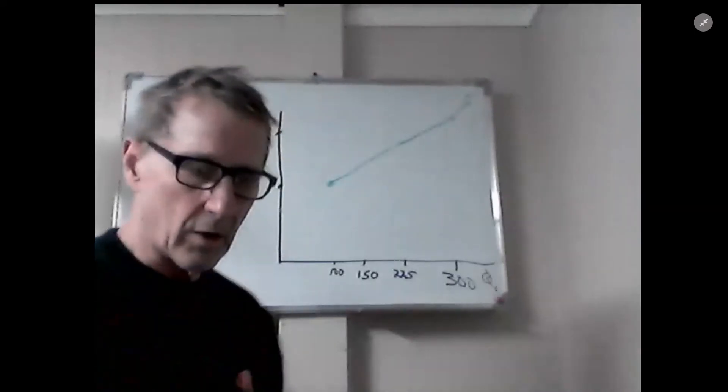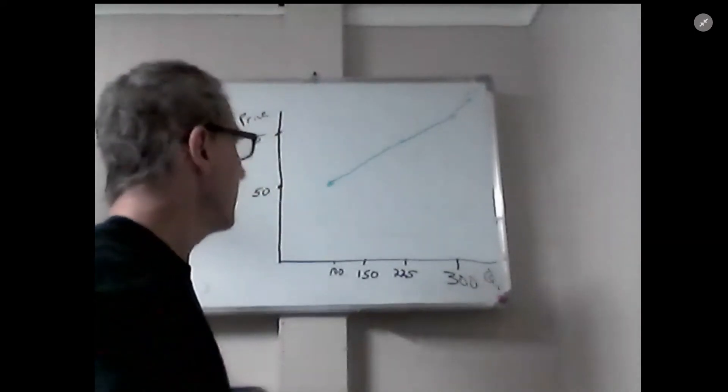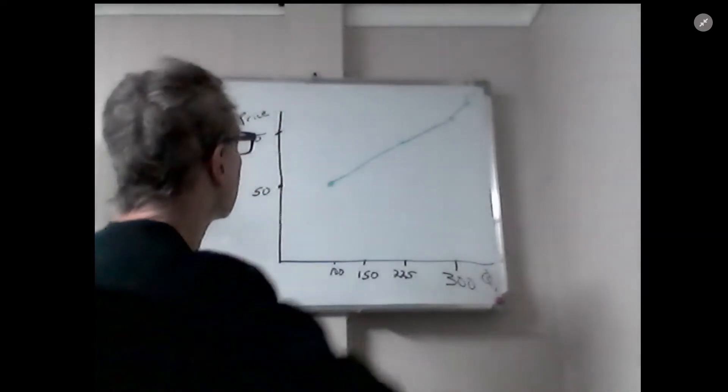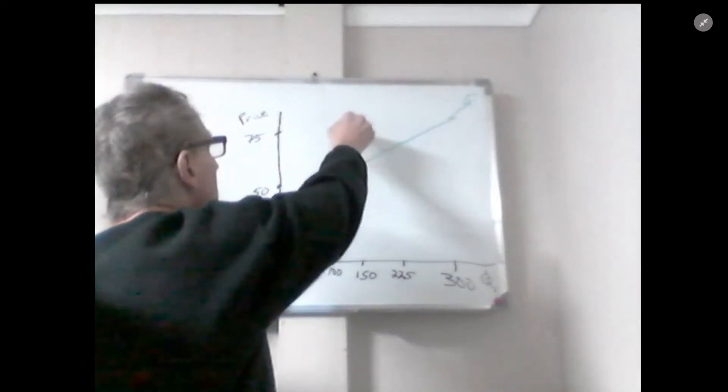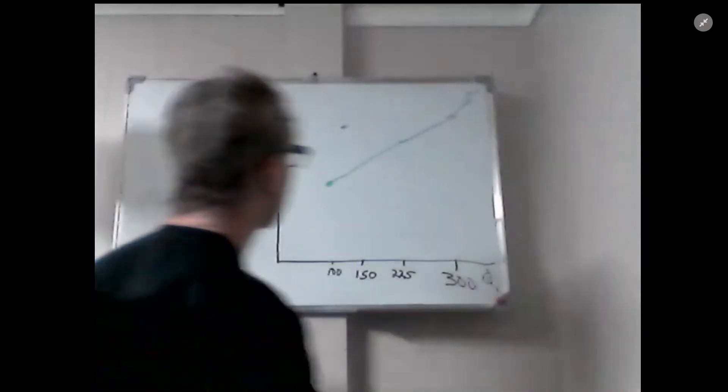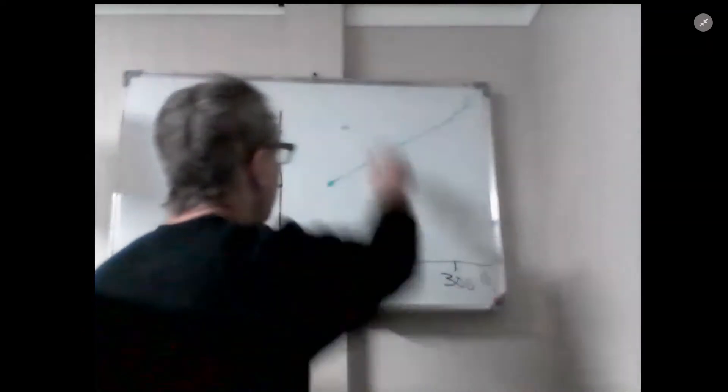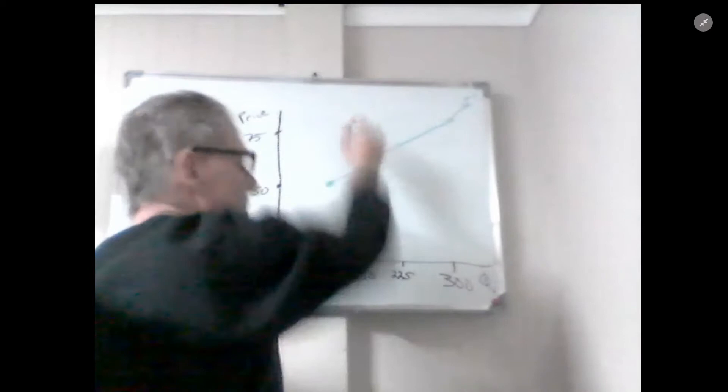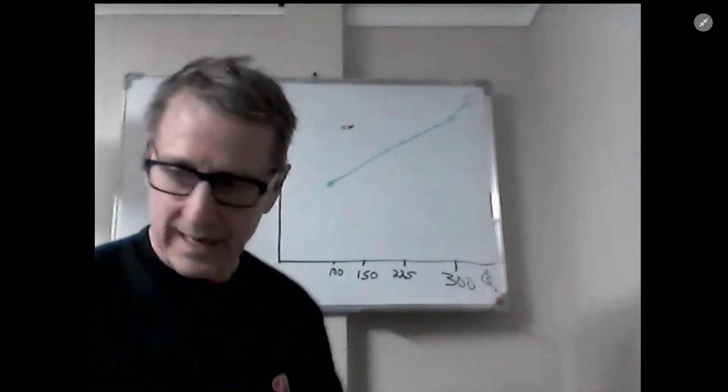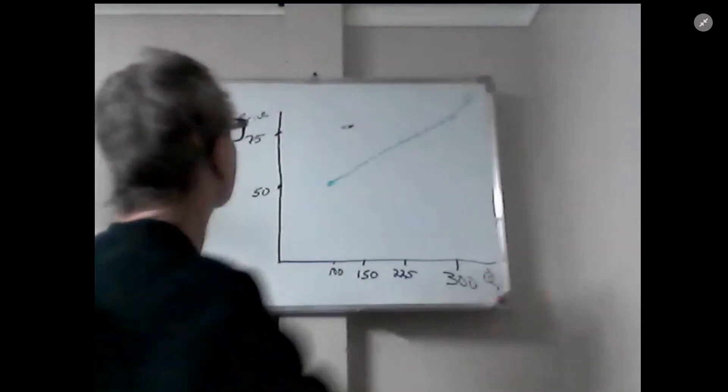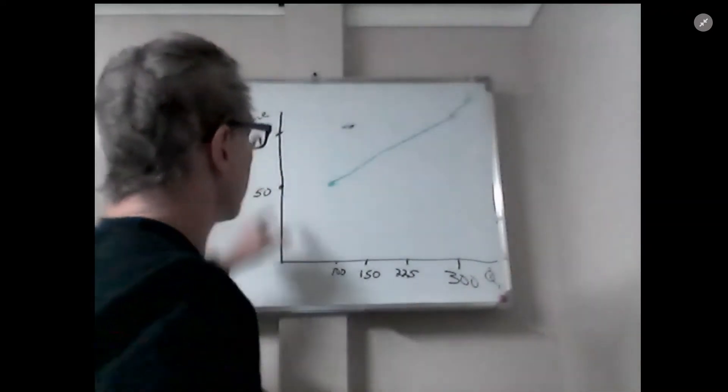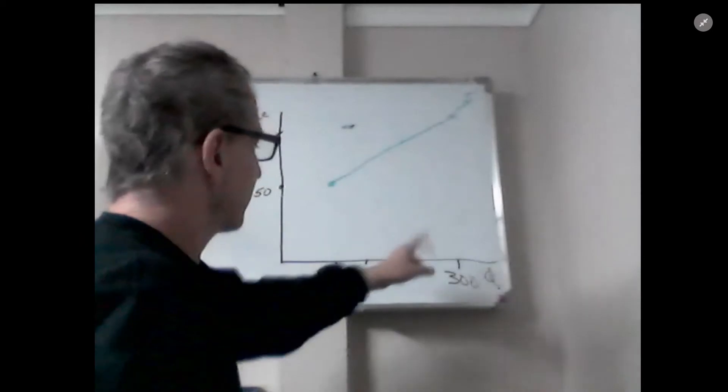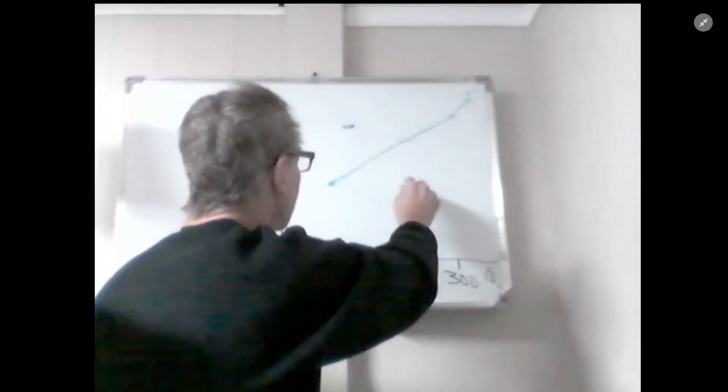That is what the supply curve looks like. Now we know at a price of $75, consumers will buy 150,000. If the price drops to $50, they get an additional 75,000, for a total of 225,000.